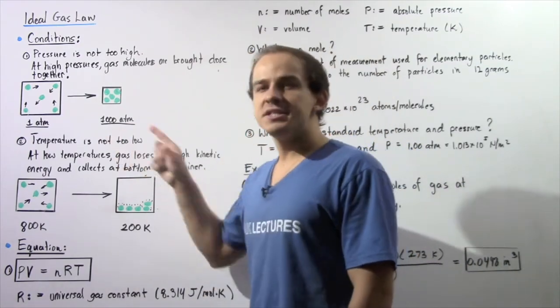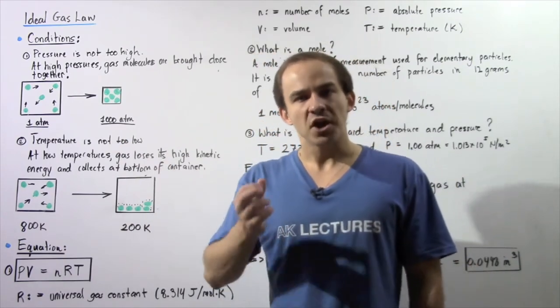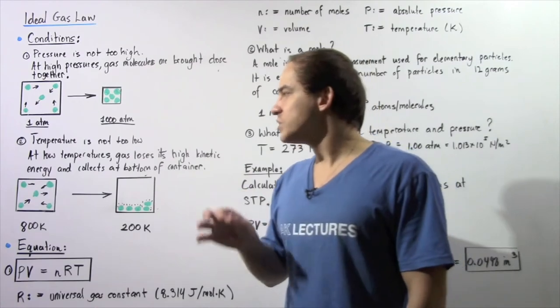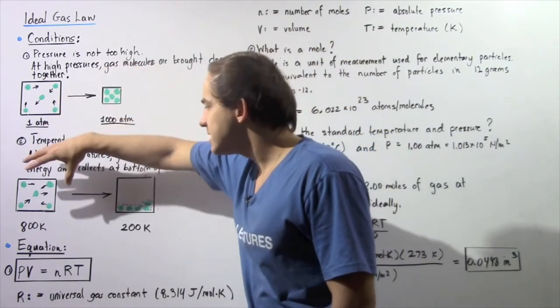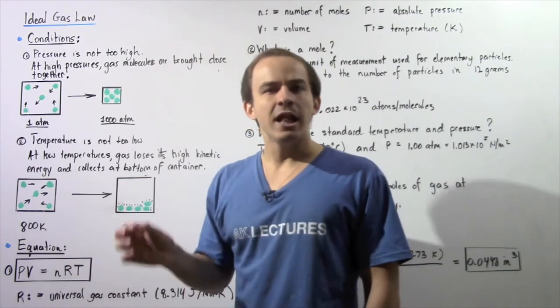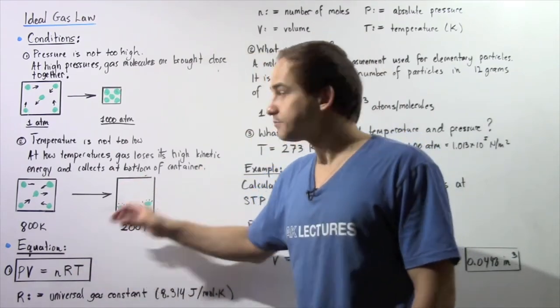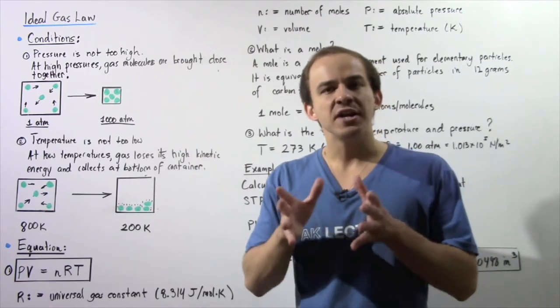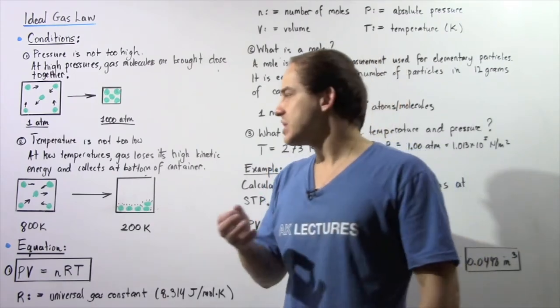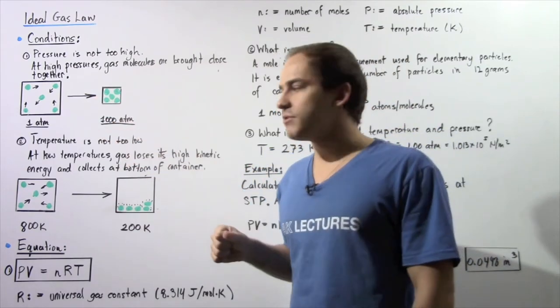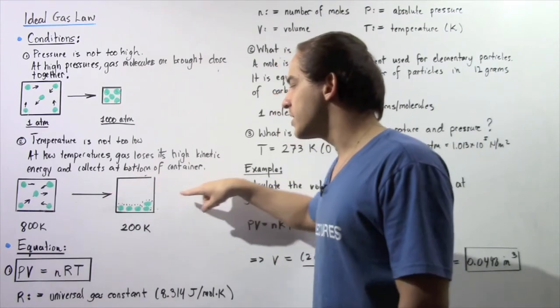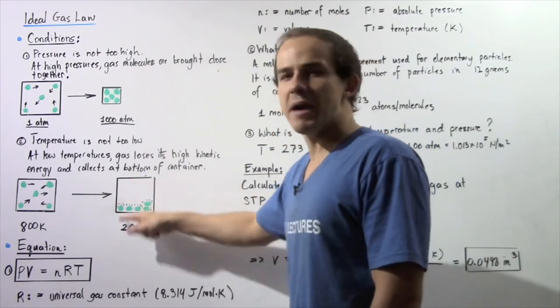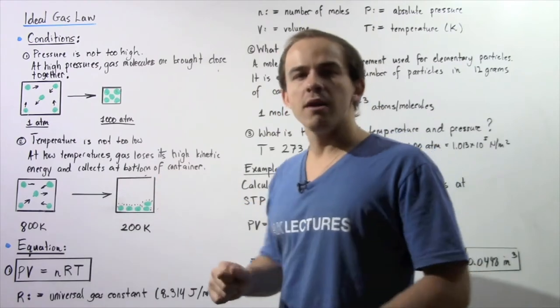Let's move on to condition number two. For the same exact reason, the temperature of our gaseous system cannot be very low. Let's recall what happens to a gaseous system when it is brought to a very low temperature. Suppose our system begins at 800 Kelvin and is brought to 200 Kelvin. At low temperatures, the gas molecules or atoms lose their very high kinetic energy. They lose their high velocity and drop down to the bottom of the container. They collect at the bottom because they no longer have the kinetic energy or velocity to move about the entire system.